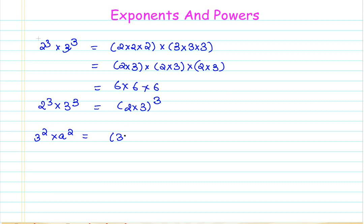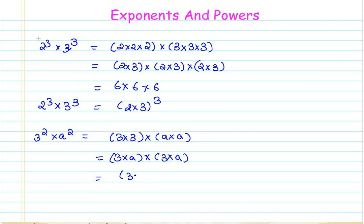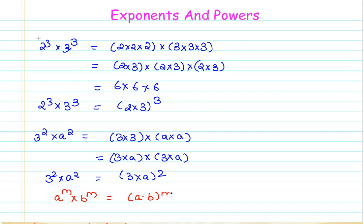This gives me three cross three cross a cross a, or in other words this is three cross a, three cross a — just applying the associative property for multiplication. You can say it is three cross a raised to the square. If I try to generalize this, I can say that a raised to m cross b raised to m is equal to a b raised to m.